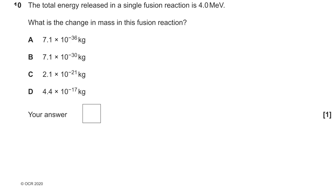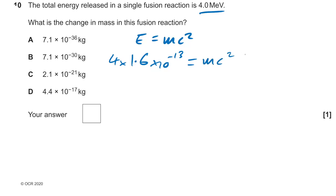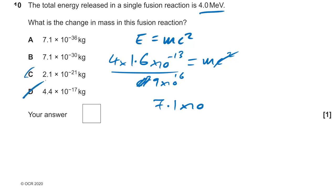Question ten: energy released in a single fusion reaction is 4 MeV. Using E = mc², converting: 4 × 1.6 × 10⁻¹³ joules (using ×10⁻¹³ for MeV) = mc². Dividing by c² = 9 × 10¹⁶, we get 4 × 1.6 ÷ 9 = 7.1, and the powers give 10⁻²⁹, so the answer is B.